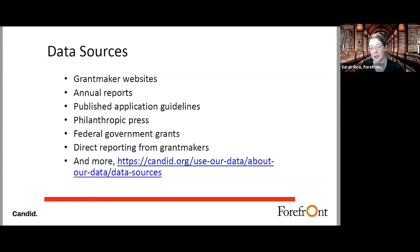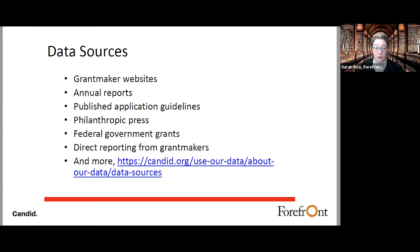FDO Essential gets its data from a number of places: grantmaker websites, annual reports, published information on guidelines, any kind of press about them, federal government grants, and direct reporting from grantmakers. There is a program called e-reporting — if anyone is associated with a foundation, please contact us about it, as it lets you be very transparent and up to the moment on your grantmaking priorities, making that data accessible to nonprofits to see whether their missions are a good fit.